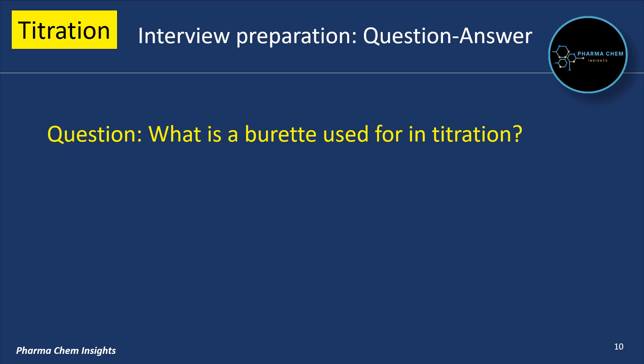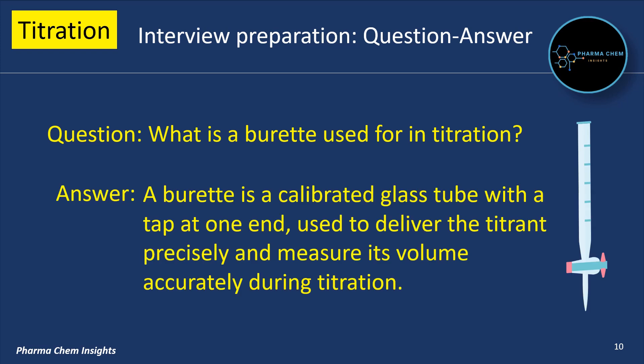Next question: what is a burette used for in titration? A burette is a calibrated glass tube with a tap at one end, used to deliver the titrant precisely and measure its volume accurately during titration.